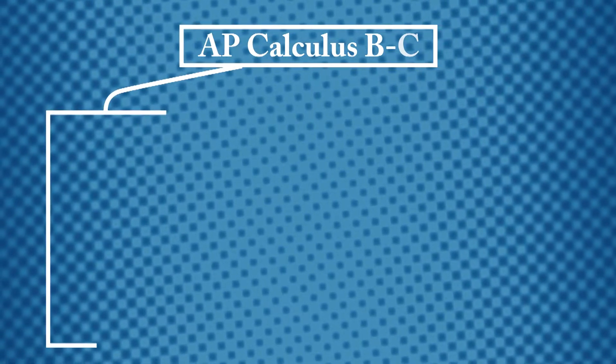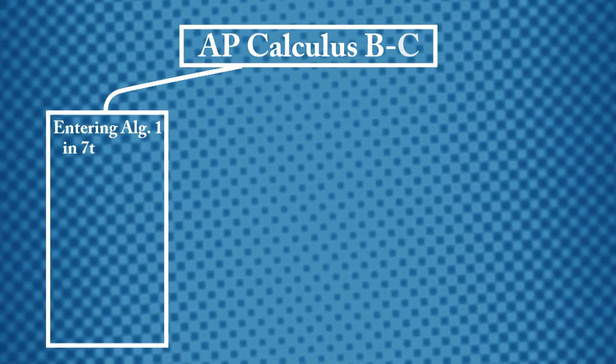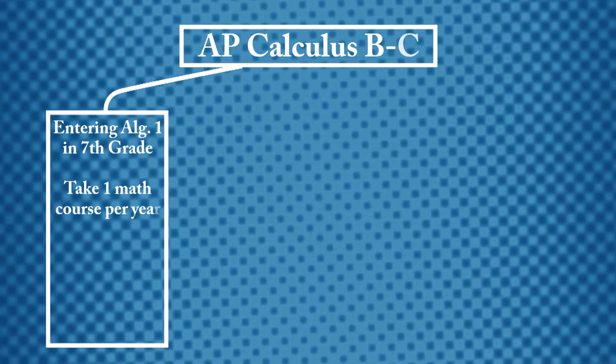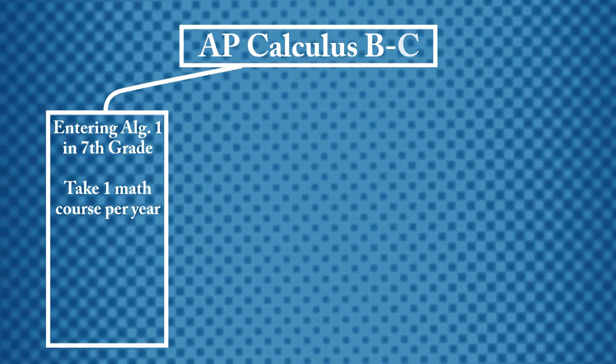For example, students who entered Algebra 1 as 7th graders can take one course each year to advance to AP Calculus BC.